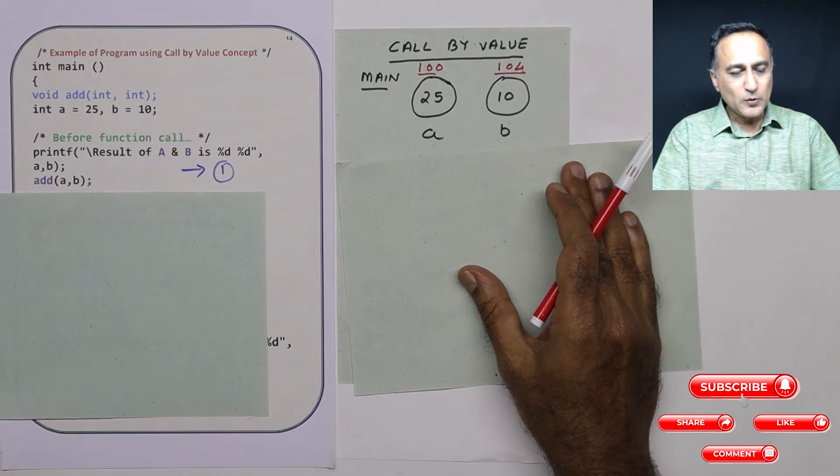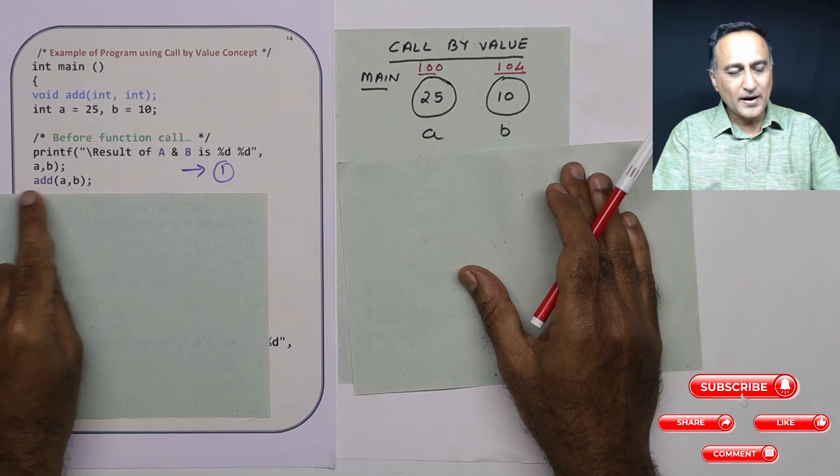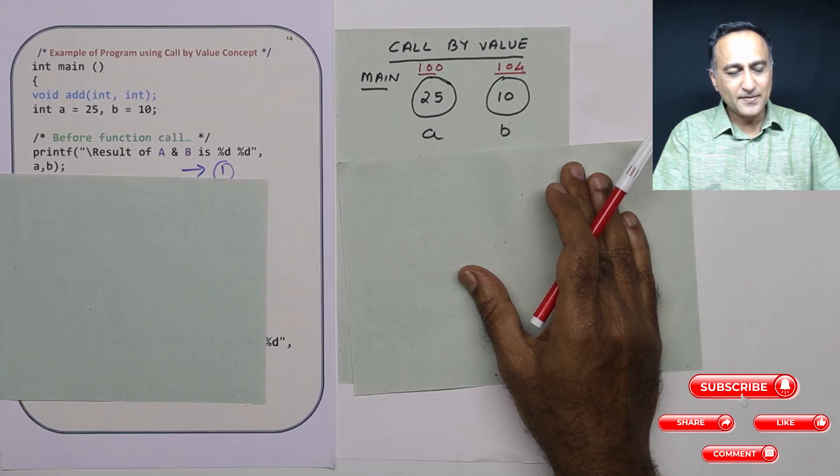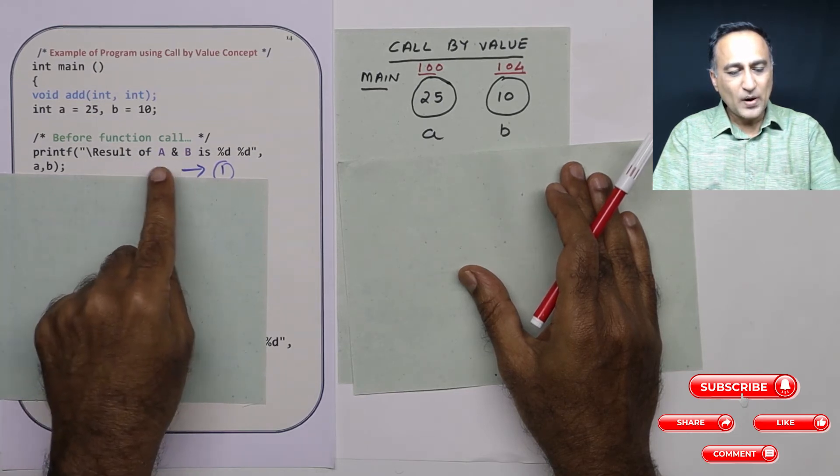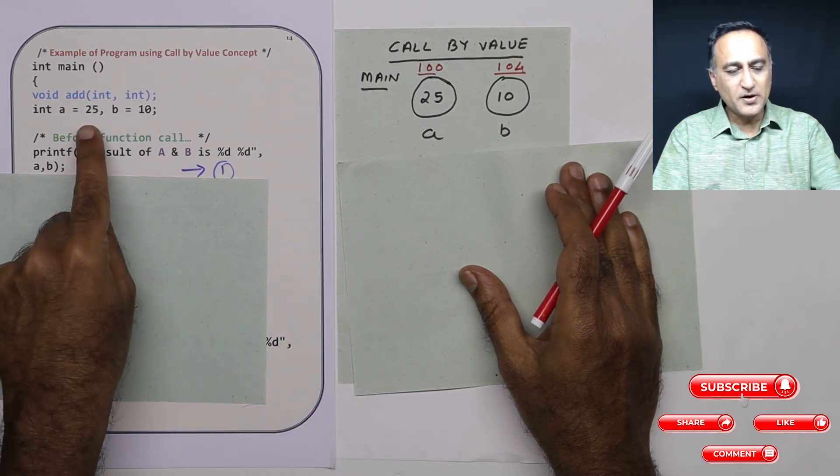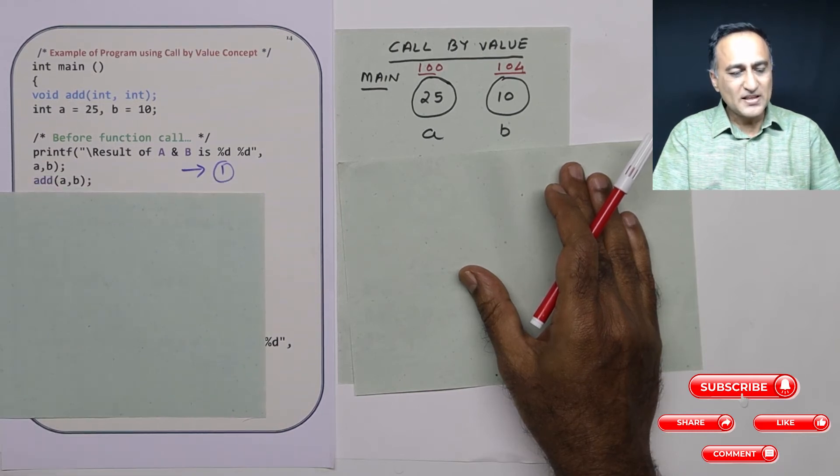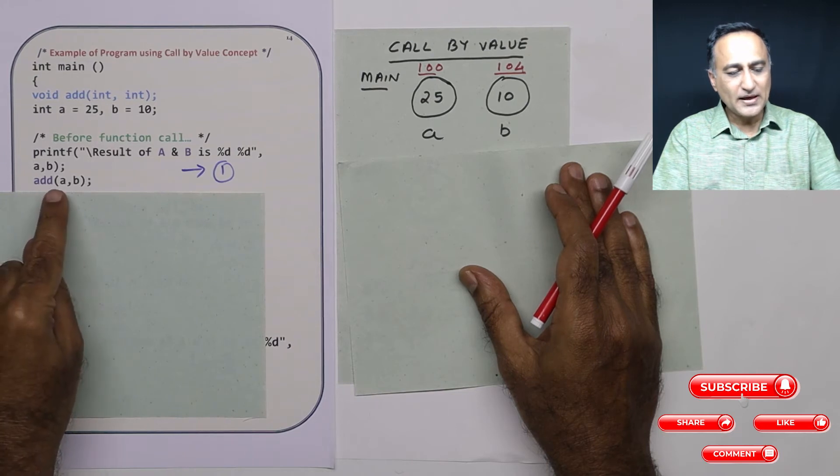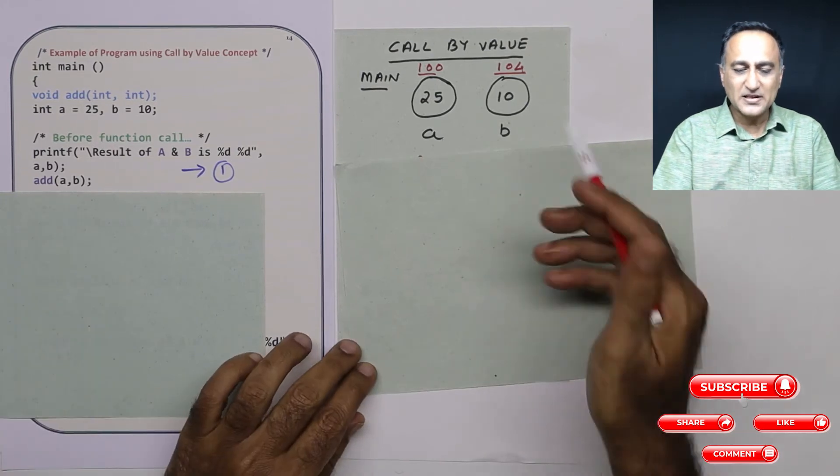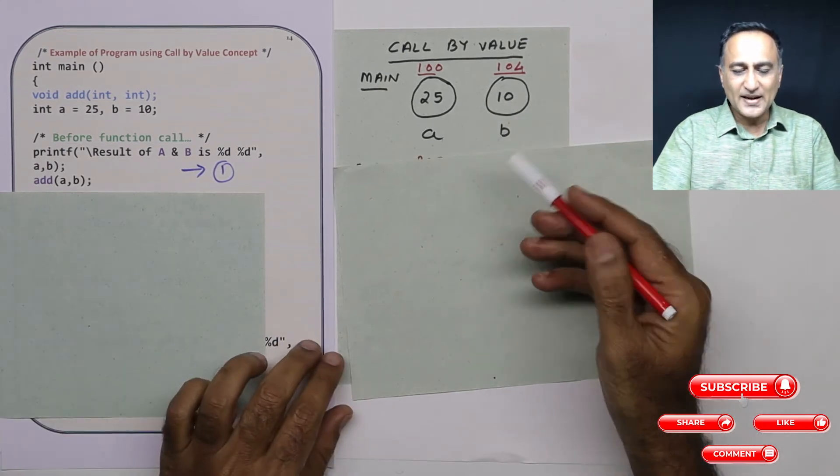In step one, before calling the add function, I am printing the values of a and b. If I print the values of a and b at this point, it will simply print 25 and 10 since I have not done anything to a and b. Then I am calling this function add with a, b, which means I am passing the value of 25 and 10 to this particular function add.